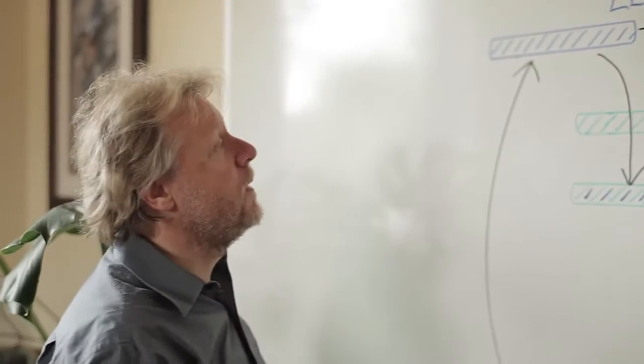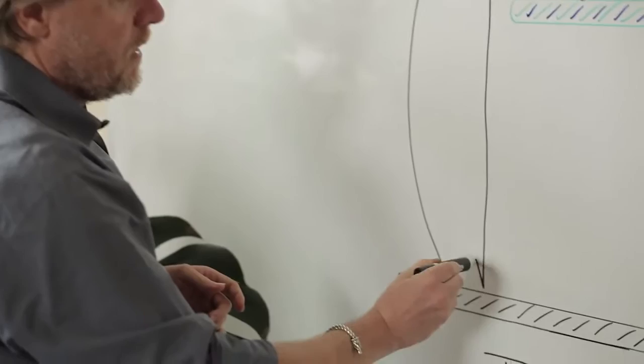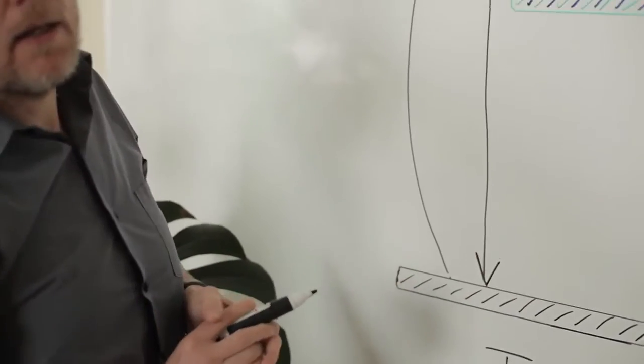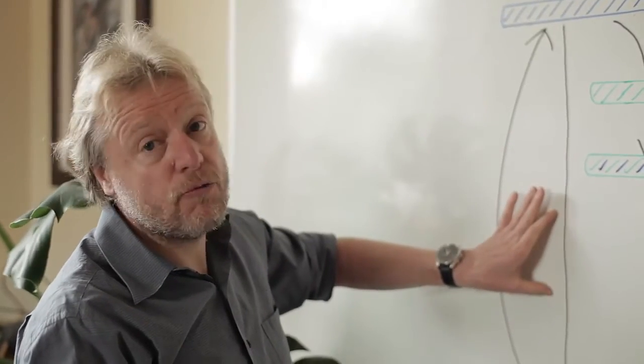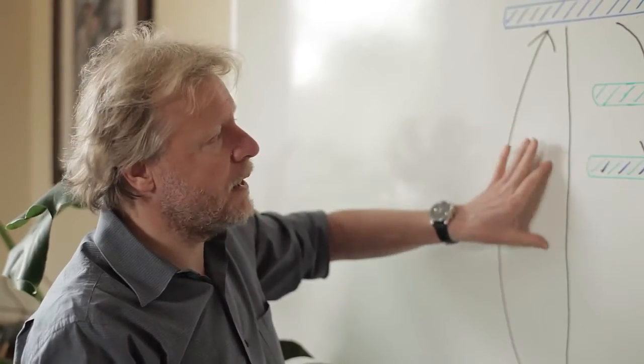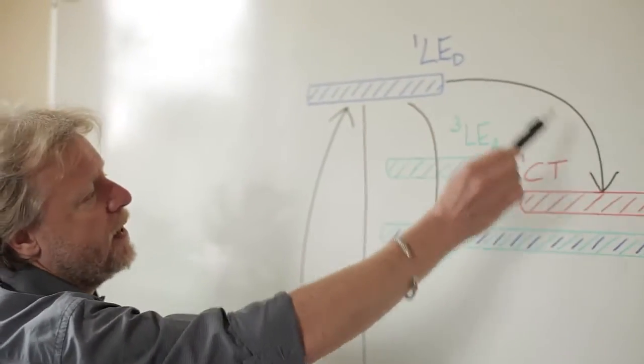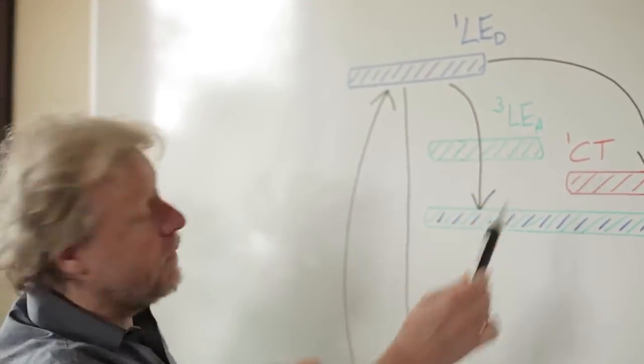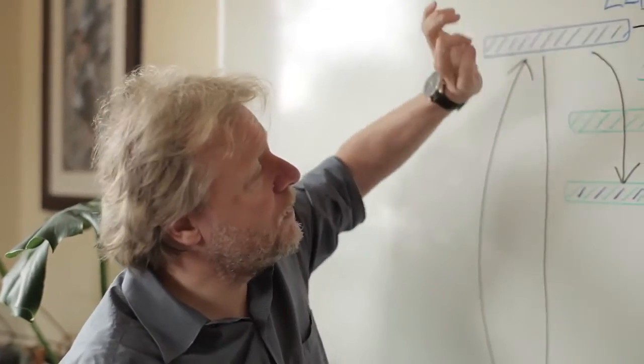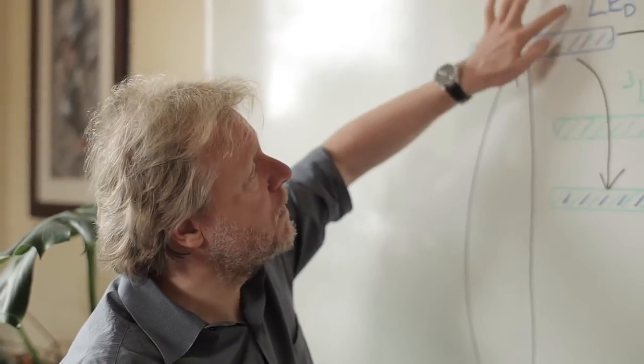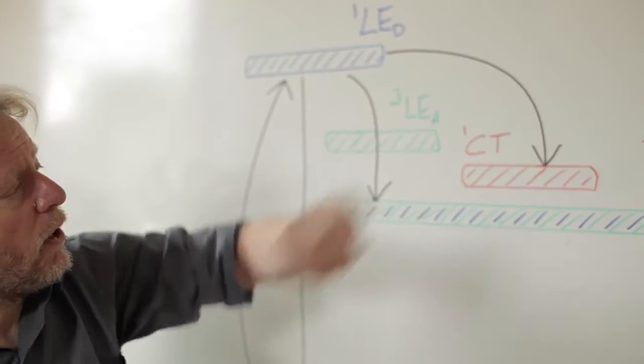There's also a third possibility that the local excited donor can decay without giving off light, and that's a loss mechanism that's really bad. We need to minimize that. This will be a problem if these two steps are very slow. So initially we excite the local excited state of the donor and we can form charge transfer states on the molecule.